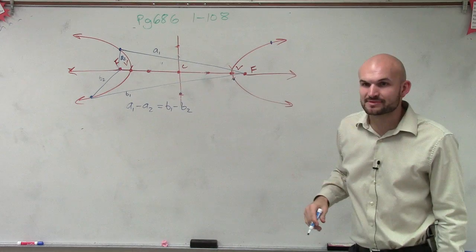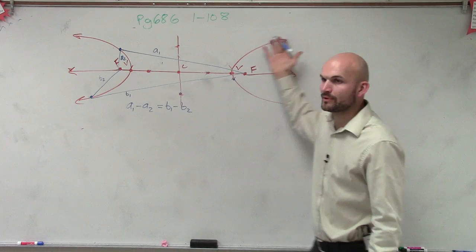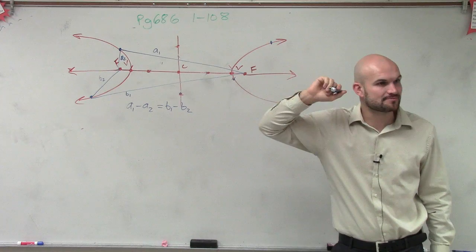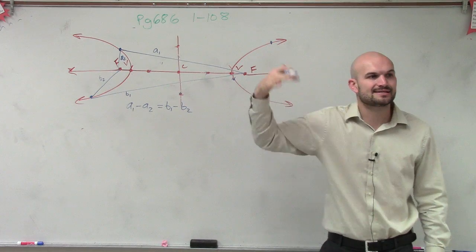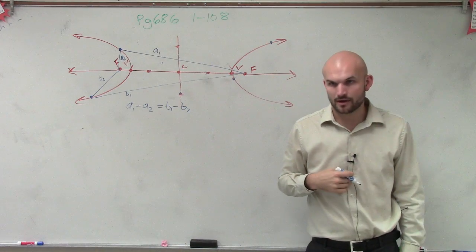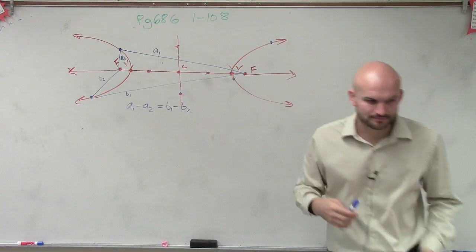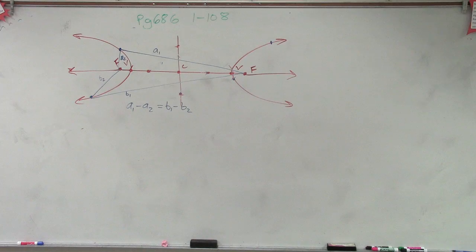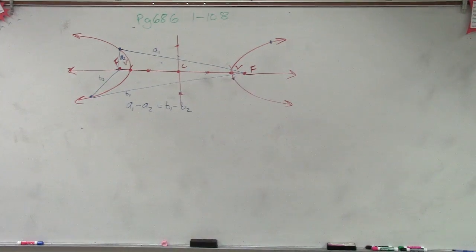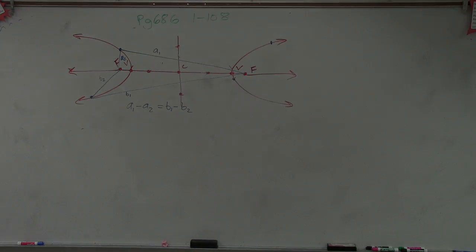And it doesn't matter where I pick my point. Anywhere on this ellipse or on this hyperbola, when I take the difference of their distances to the two foci, it's going to be constant. So that's your definition of your hyperbola. Now, the next thing that we'll get into is what are the characteristics of the hyperbola?